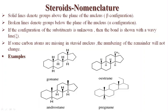Solid lines denote groups above the plane of the nucleus — this is the beta configuration. Taking four examples — gonane, estrane, androstane, and pregnane — the solid lines shown in each represent groups above the plane of the nucleus. Broken lines denote groups below the plane of the nucleus and this is known as alpha configuration.